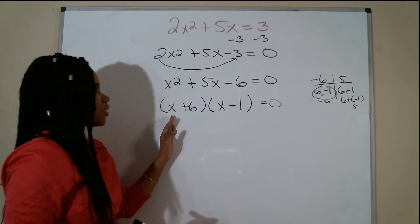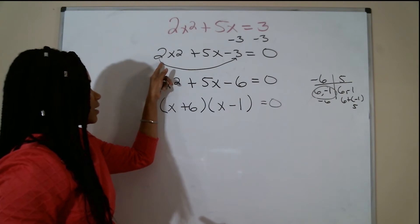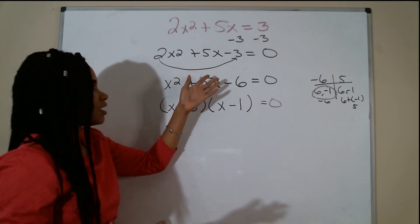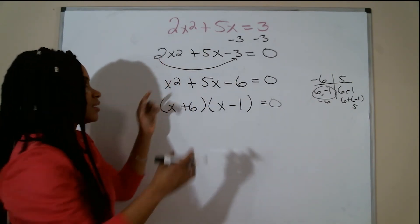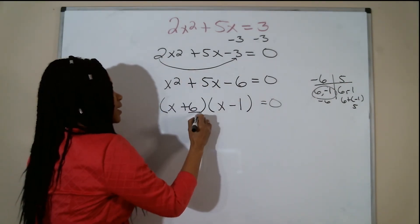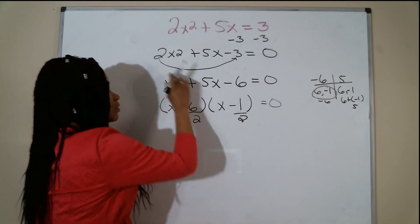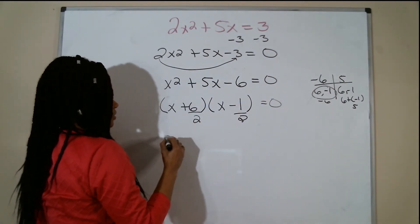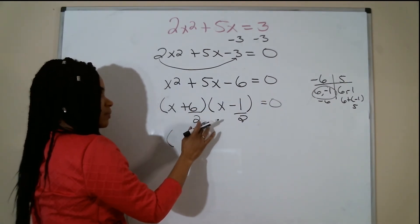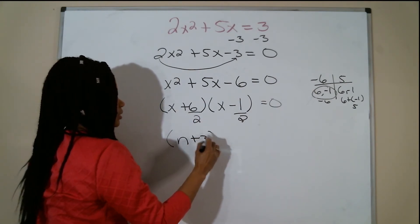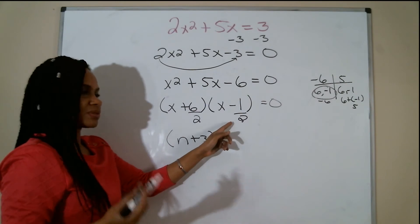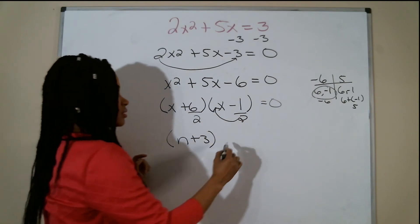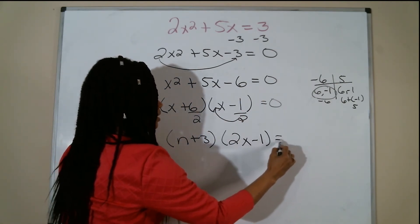Now the next thing I want to do is divide what I slip to the end. Whatever your coefficient was for your x squared term, I slip that 2 to the end. I want to divide it by my factors. If I can reduce, I want to reduce it. So 6 divided by 2 reduces to 3. Here I cannot reduce without getting a decimal, so I want to slide that 2 up to the front. That would be 2x minus 1.